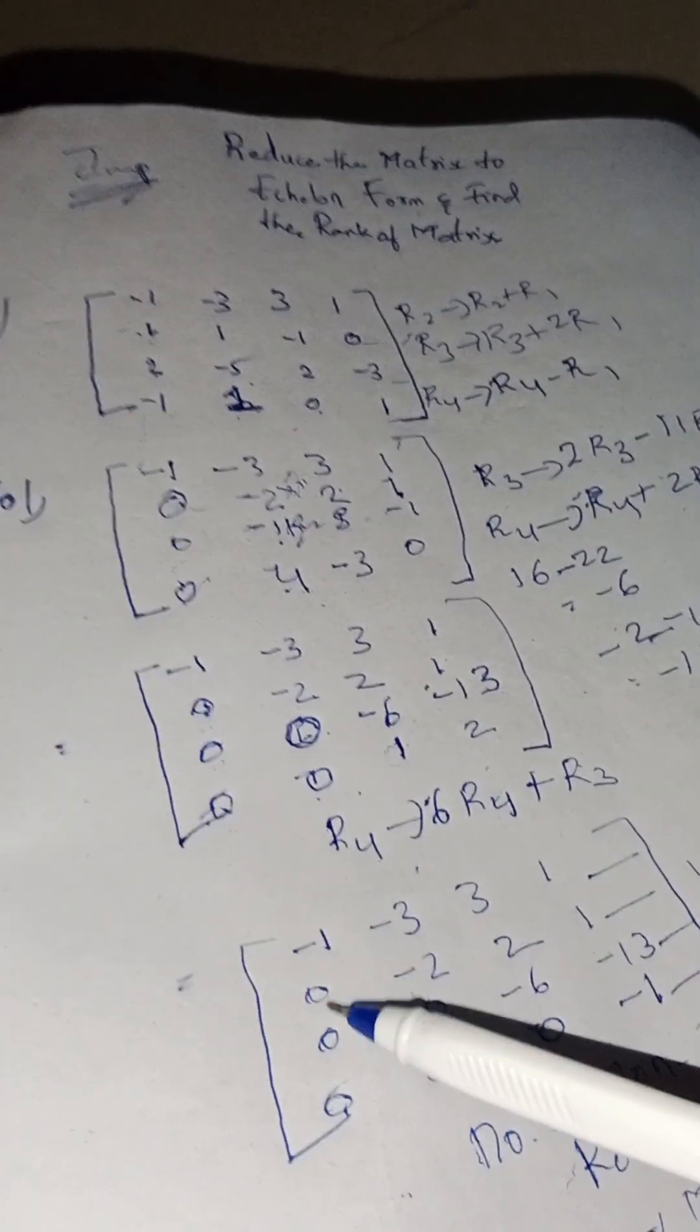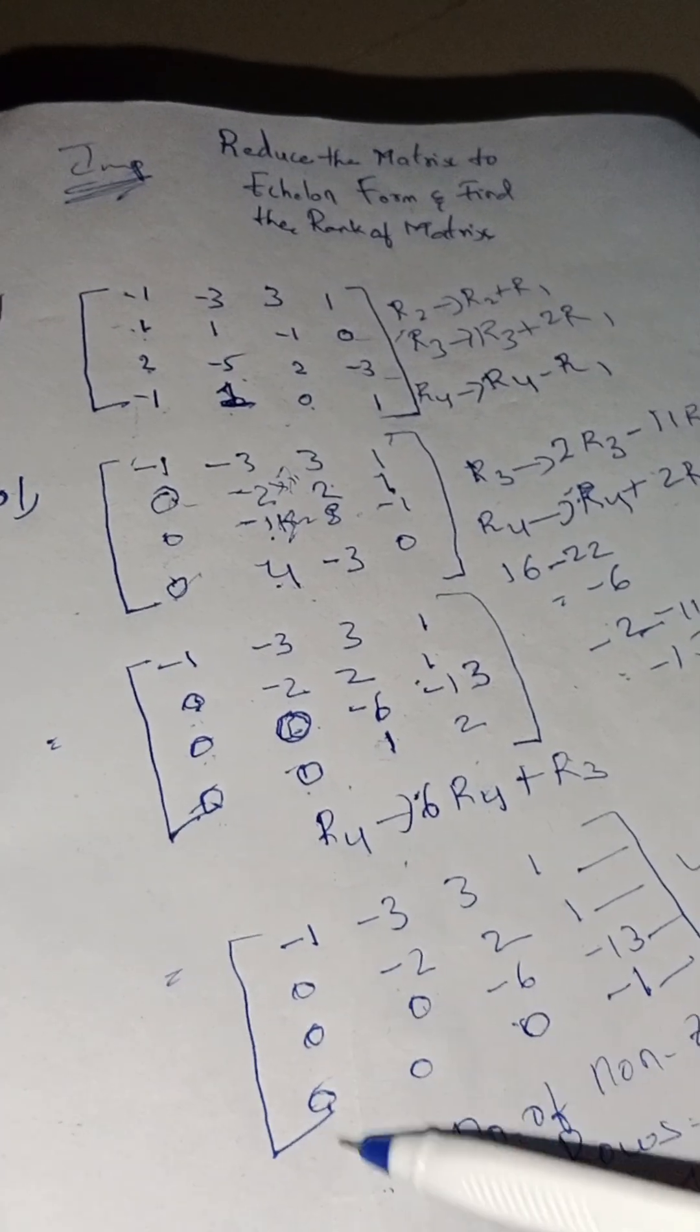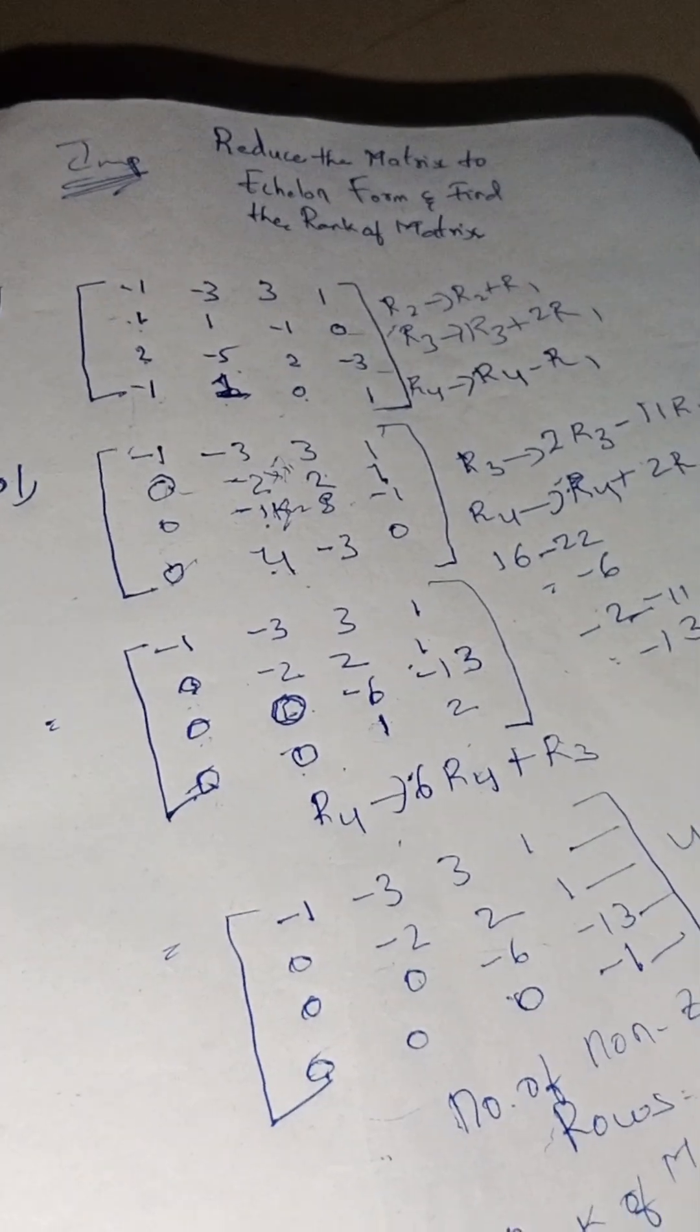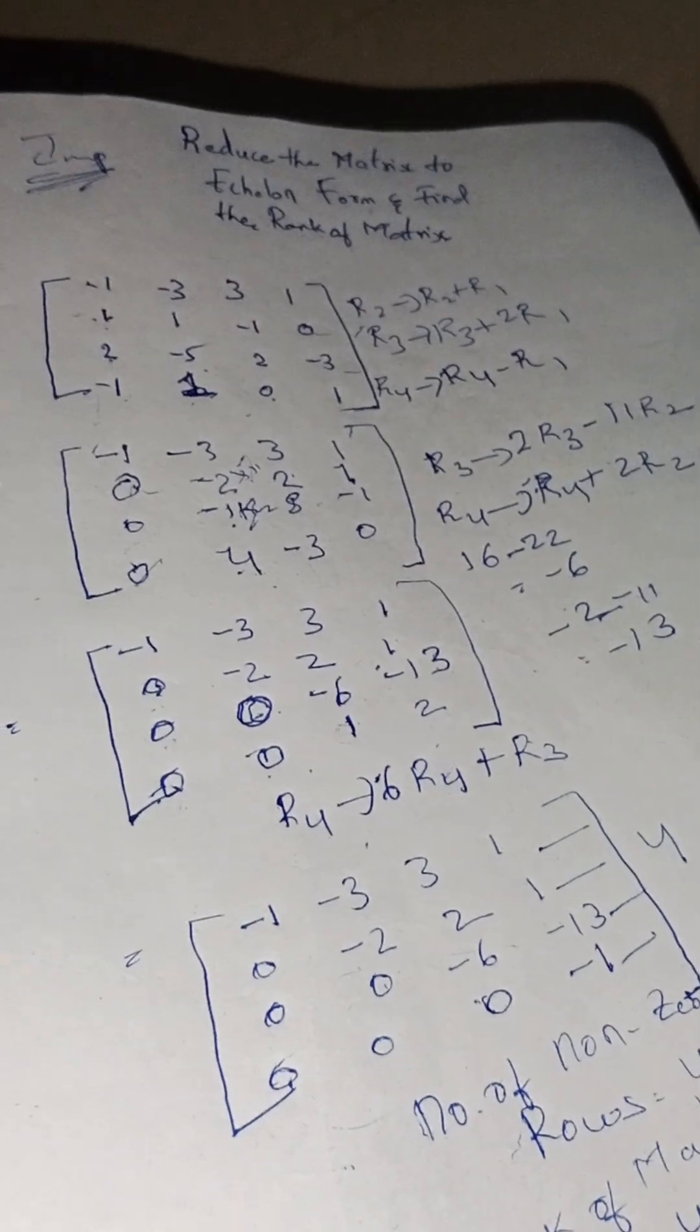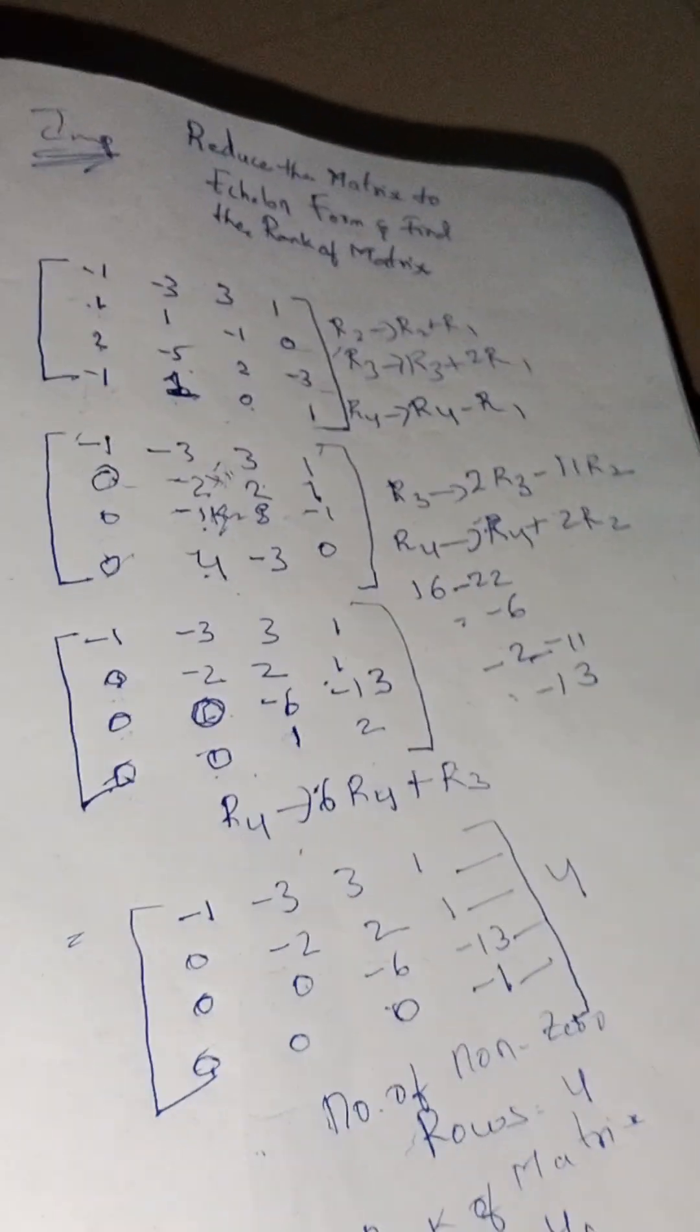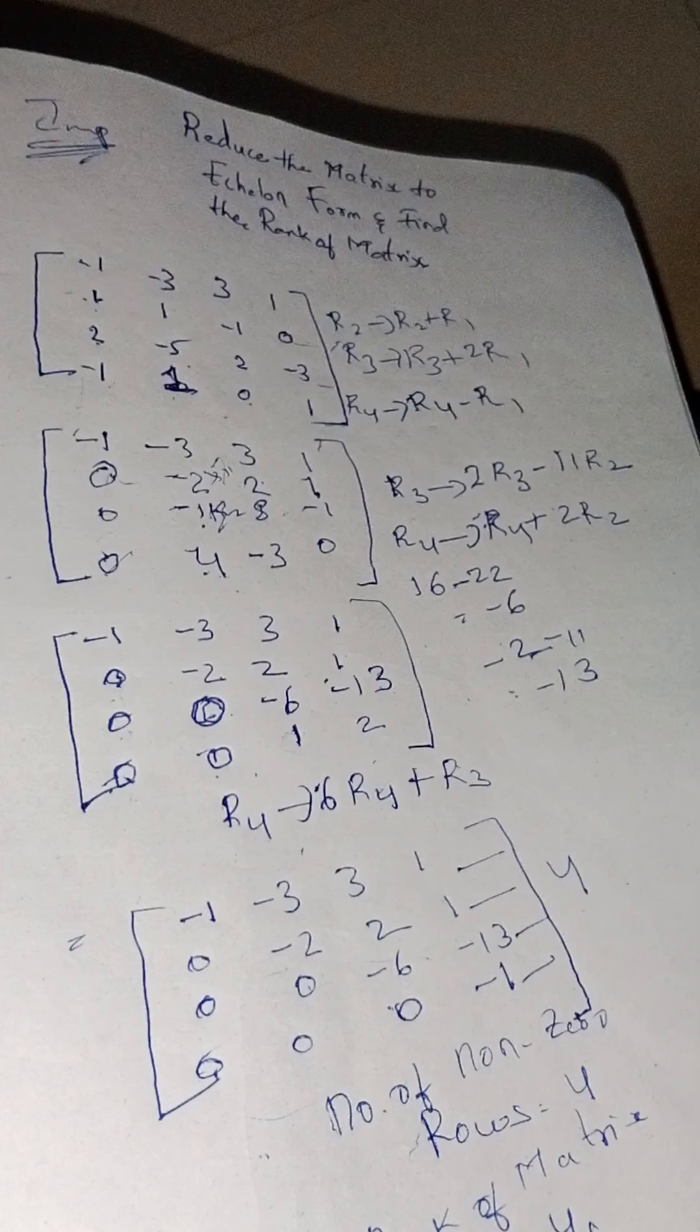If you have clearly observed, we got all zeros in the lower triangle, so it was reduced to echelon form. Here the number of non-zero rows is 4, so the rank of the matrix will be 4.